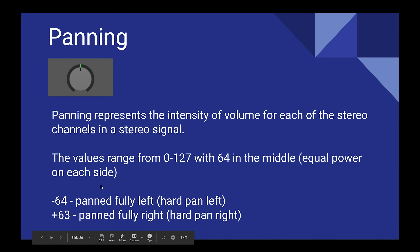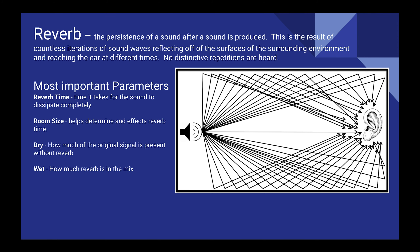Panning is represented as a value between 0 and 127, with 64 being center. Panning represents the intensity of volume for each of the stereo channels. A really important concept is equal power panning — because when panning happens it silences the channel not being used, which can make the sound get quieter. Equal power panning intensifies the pan of the left or right channel to ensure the sound stays at a consistent perceived loudness.